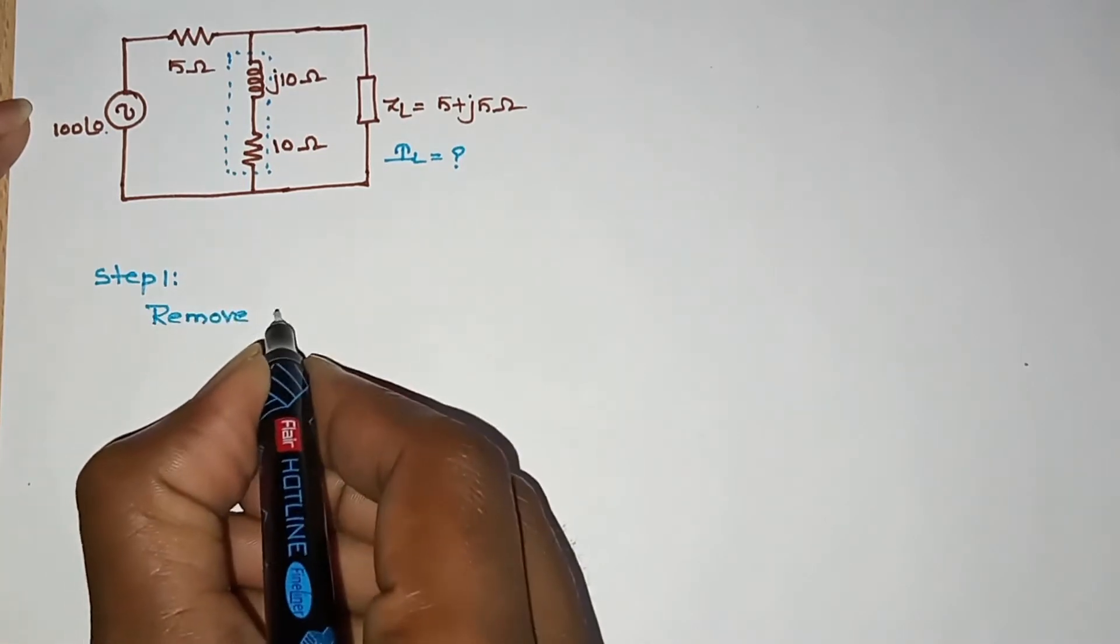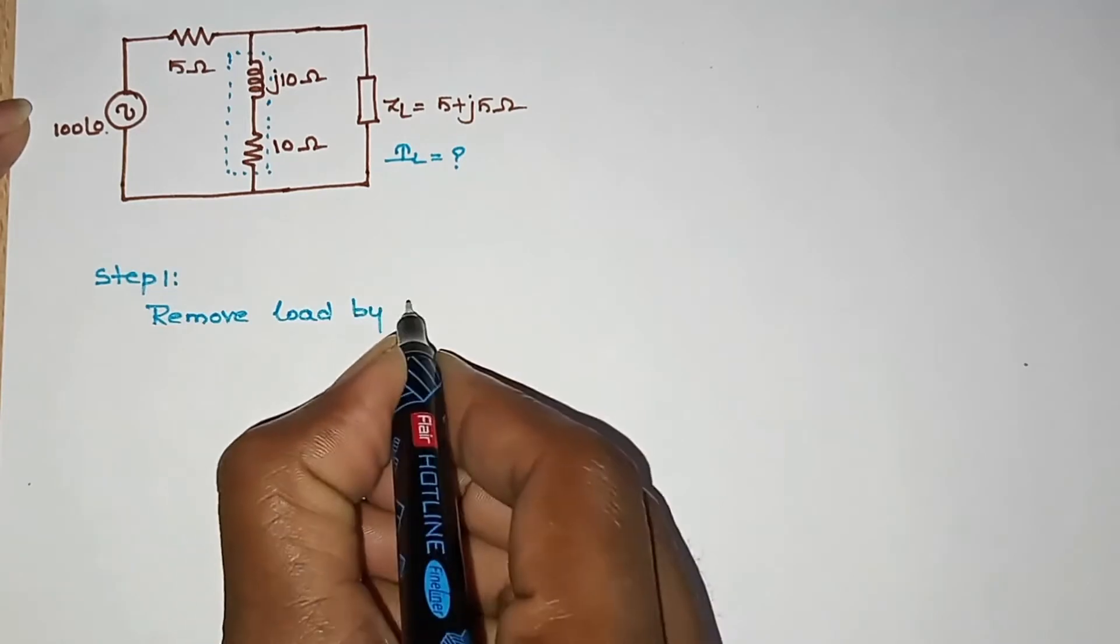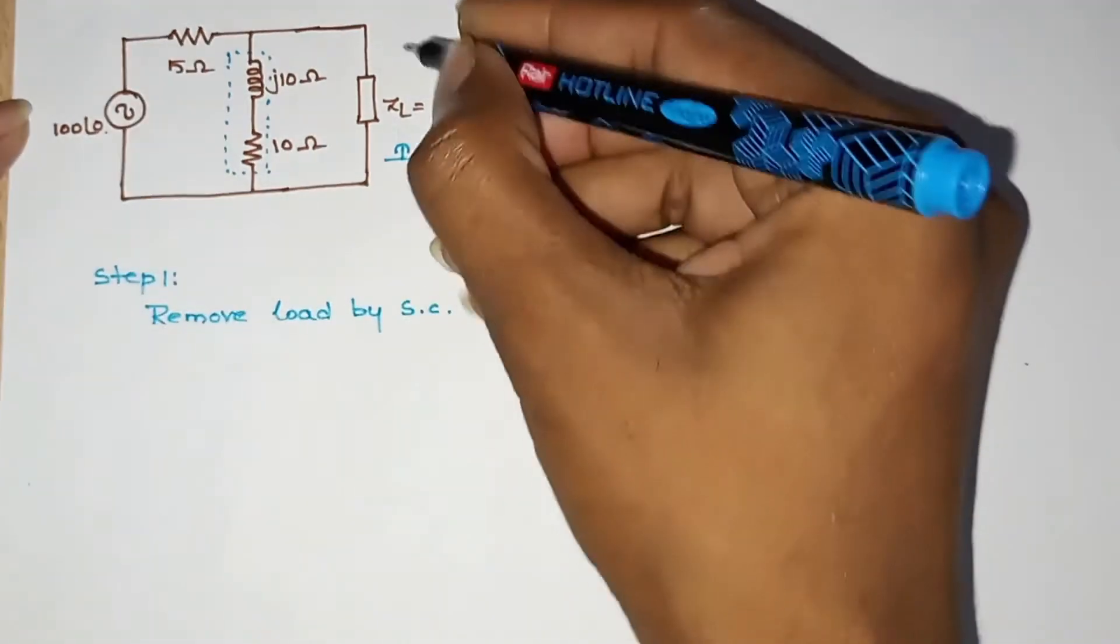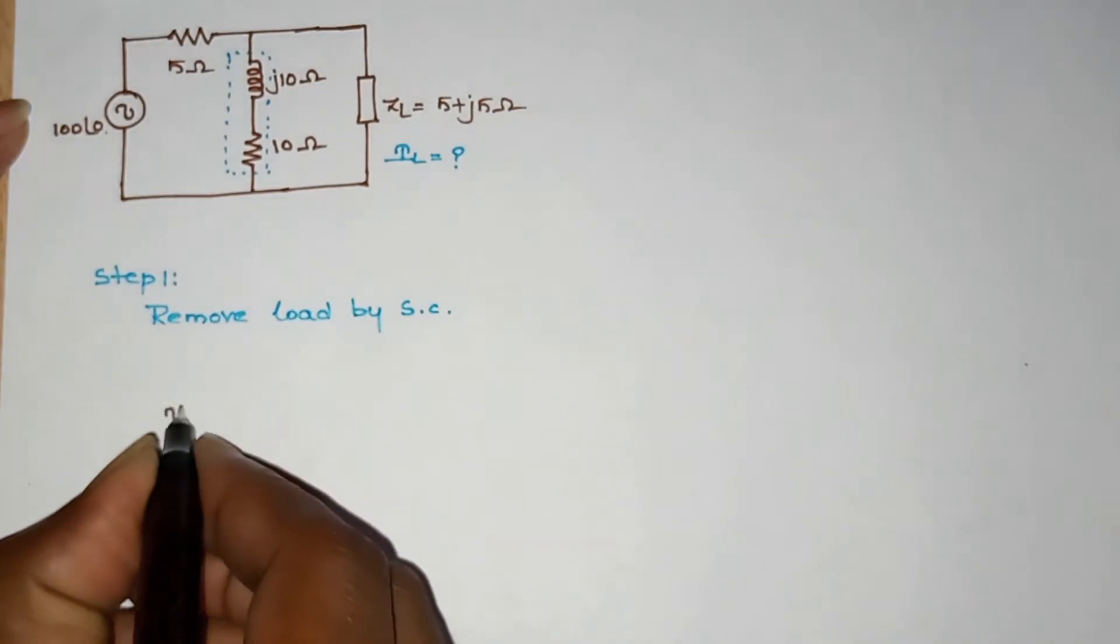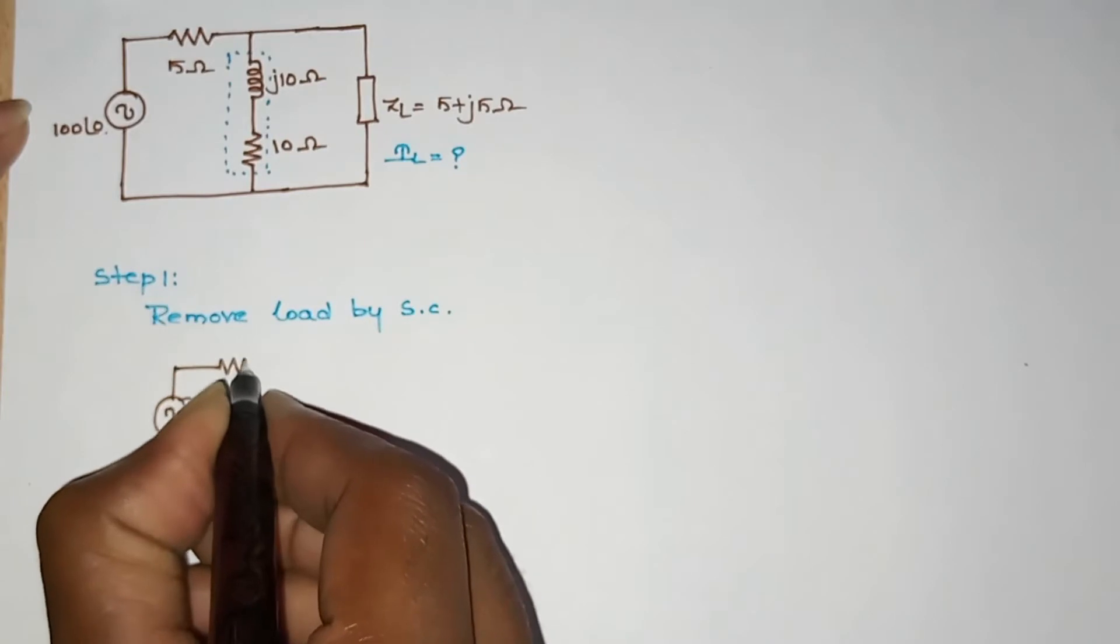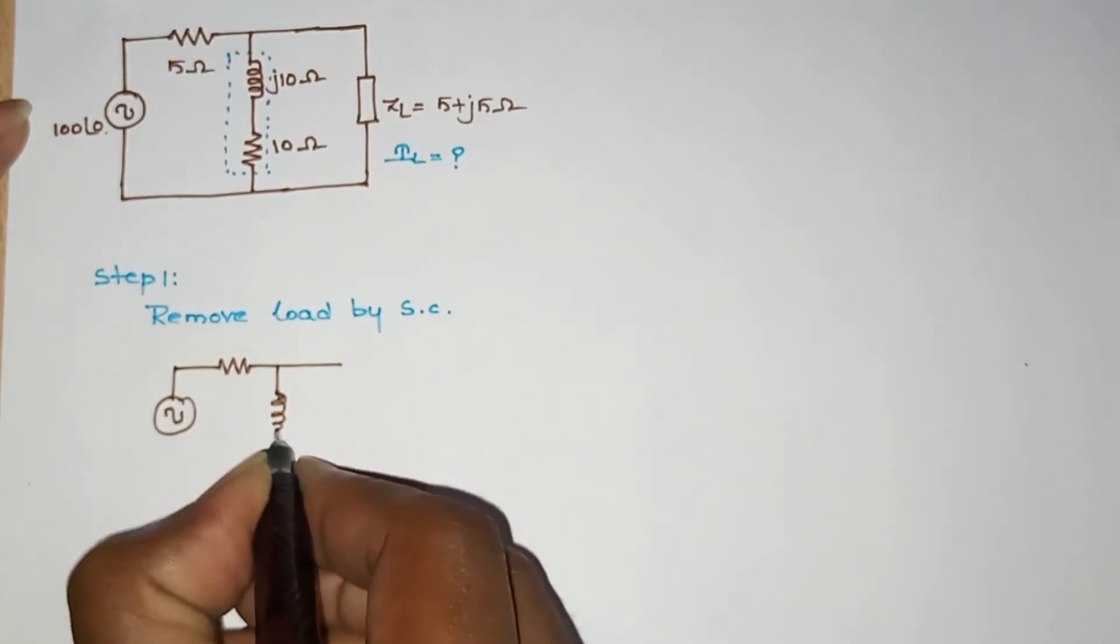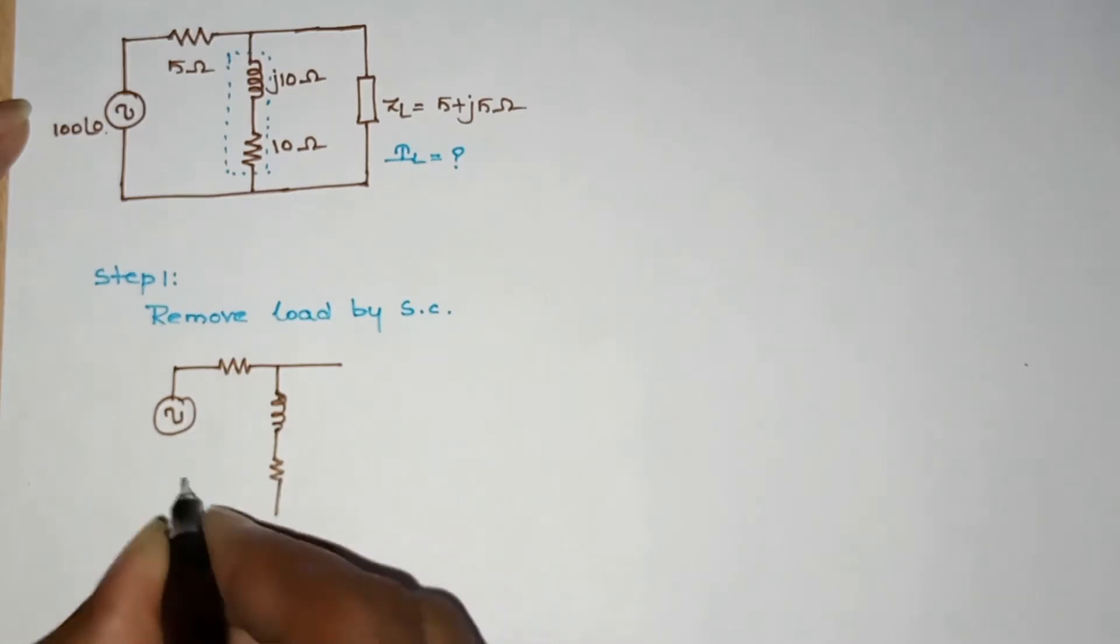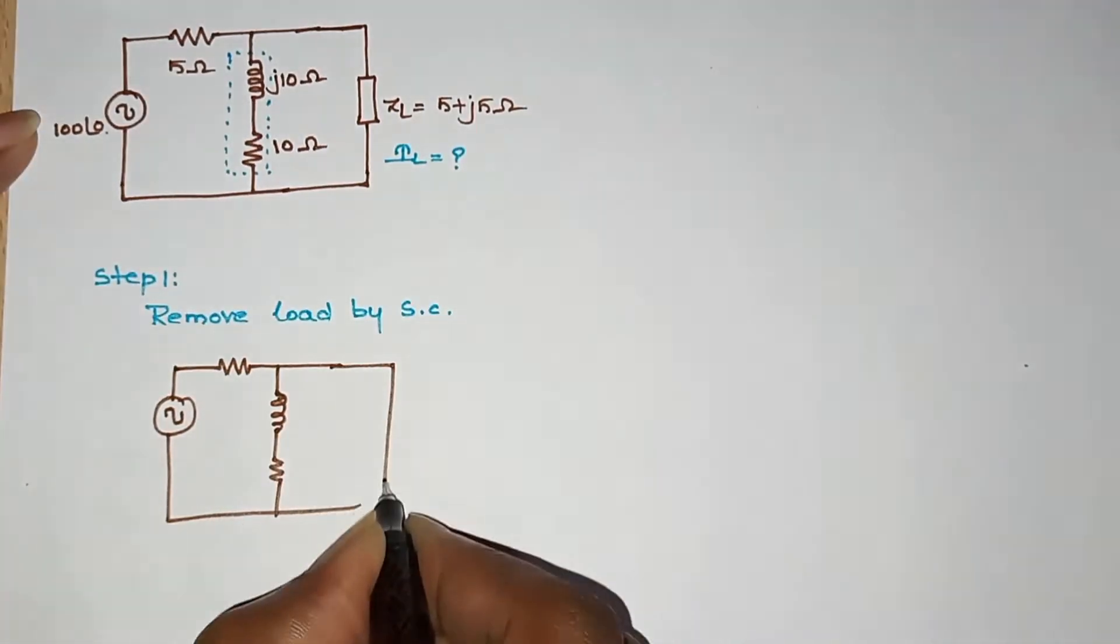Remove load by source circuit. This is our current value. We need to remove the load. We need to remove voltage source. This is 5 ohms resistance. This is our inductance. This is our resistance.